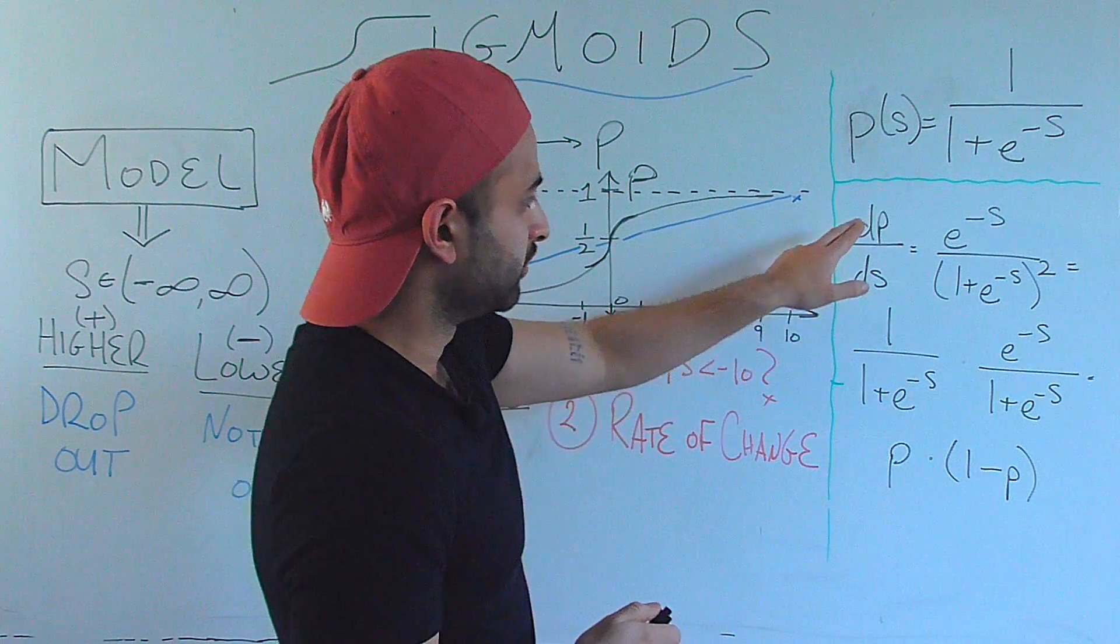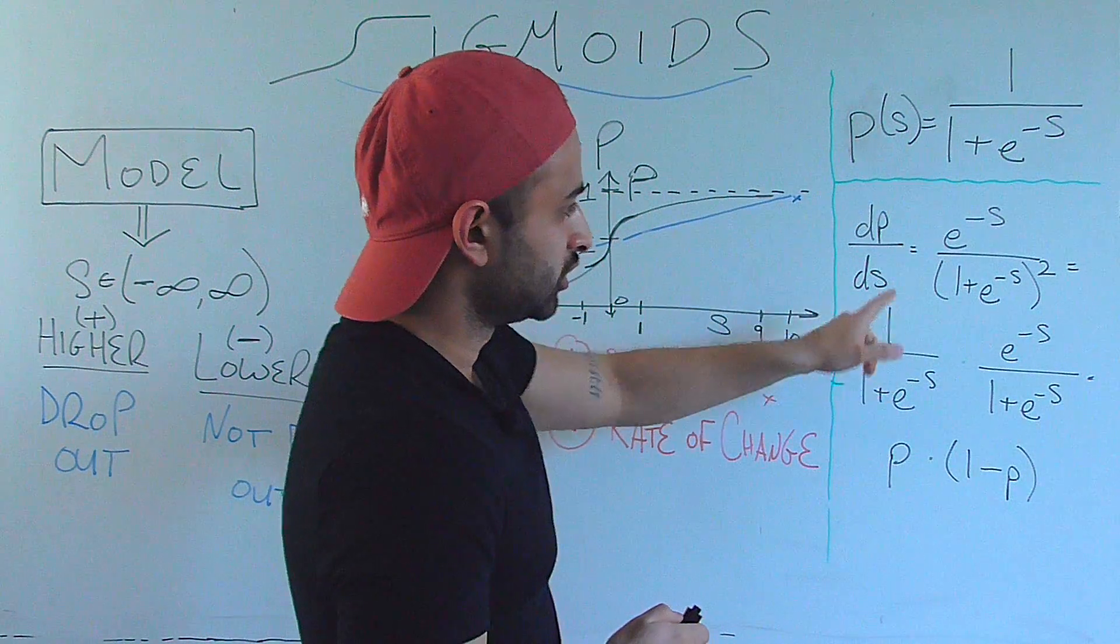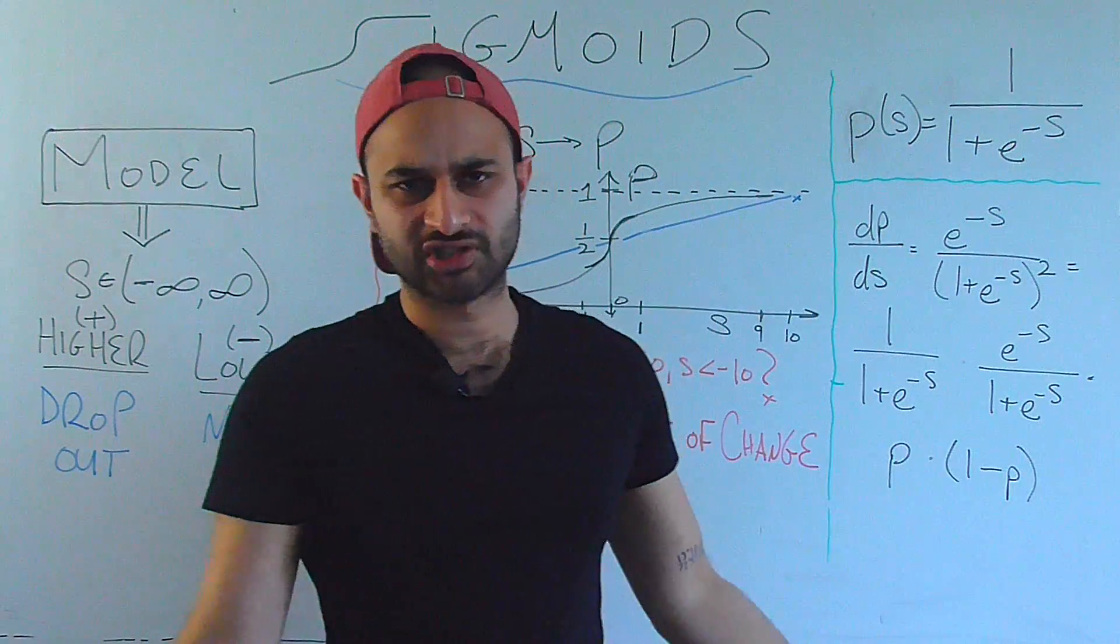Either way, this is the derivative of the sigmoid. So it would be dp ds, p being the probability, s being the score. So you can work out for yourself that this is the derivative, I'll go through the high level steps with you.